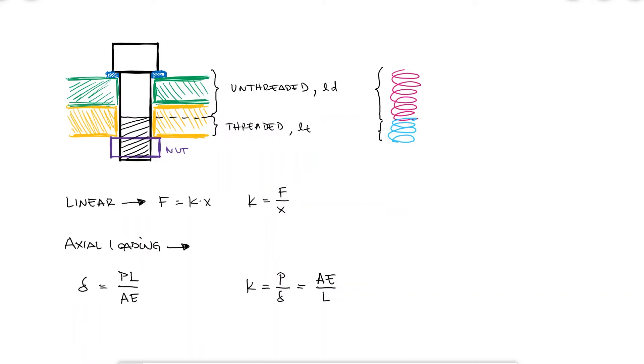In case you've forgotten how springs in series are added, just look at the overall displacement of two springs in series when they are subjected to a force F. The total displacement is equal to the sum of the displacement of each spring, which in turn are all equal to the force over the stiffness, the equivalent stiffness on the left and the stiffness of each spring on the right.